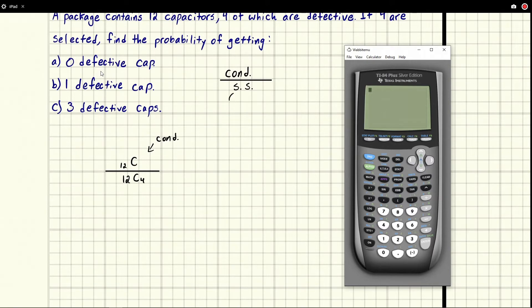Sample space, all the possibilities live there. And a condition is only the conditions we're concerned with. In this case, the sample space is all the ways we can pick four capacitors. And the condition is given by ABC, in this case, zero defective capacitors.